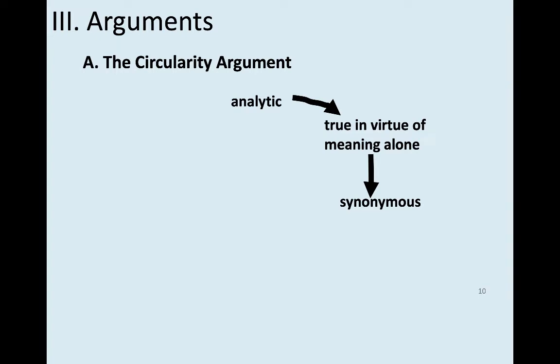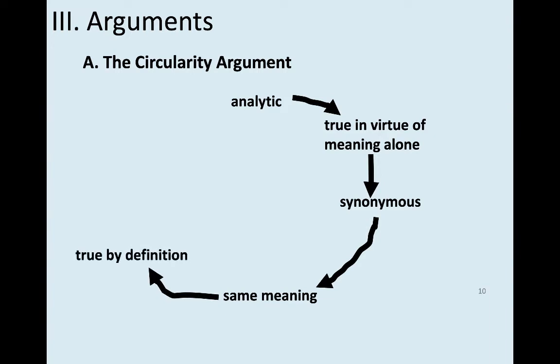You might say it's appealing to synonyms. So the statement 'sisters are female siblings' is true in virtue of its meaning alone because the word 'sister' is synonymous with the conjunction of 'female' and 'sibling.' Now, what is it for two words to be synonymous? What is it for 'sister' to be synonymous with 'female sibling'? You might say it's for them to have the same meaning.